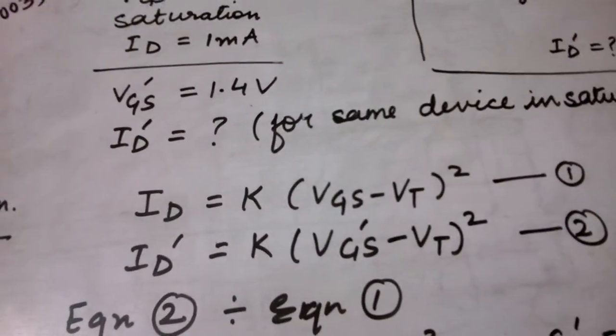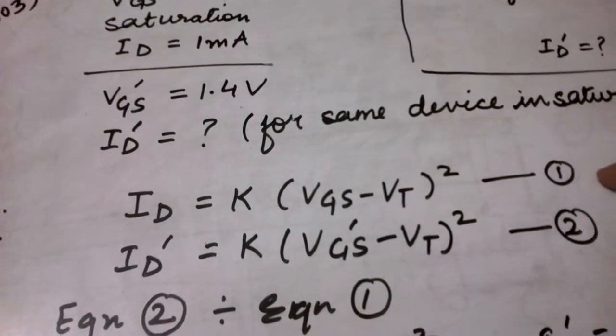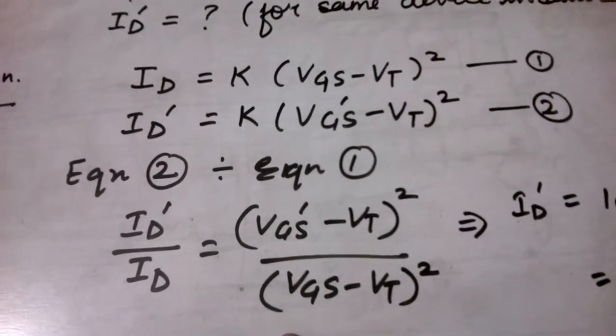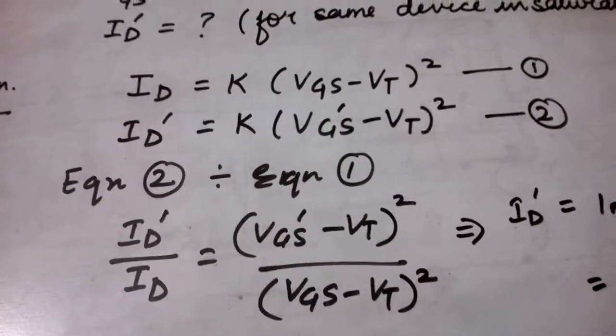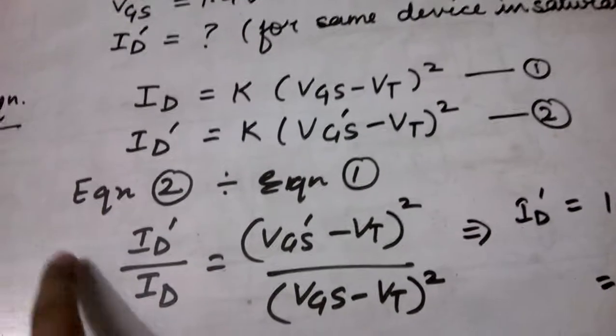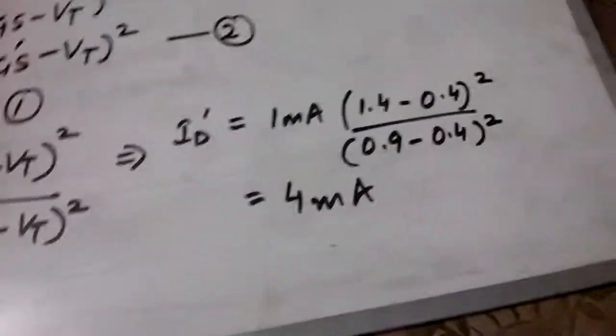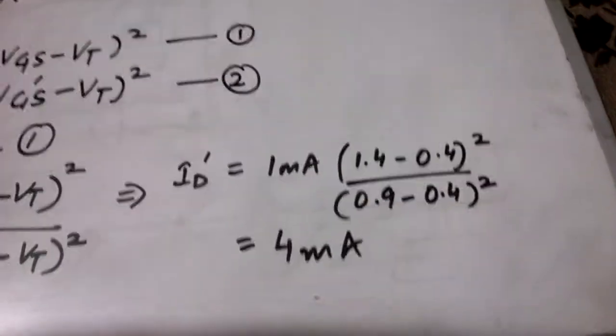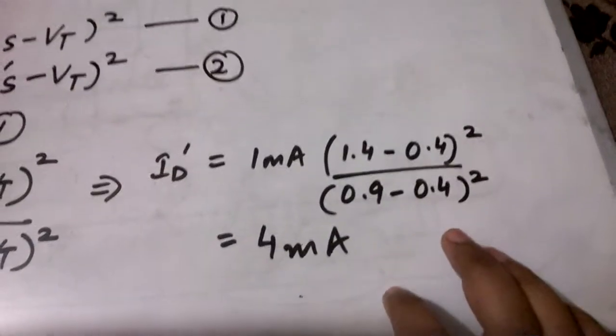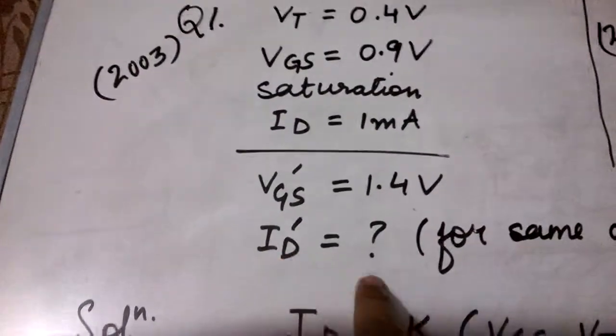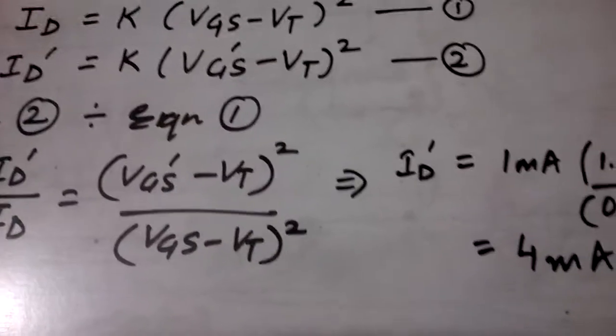I divide equation number 2 by equation number 1. Doing this we get this particular equation. K gets cancelled here. Now we can put all the values since we know all the values except Id dash, so we can find the unknown Id dash as it is shown here. The final result for the drain current which we get is 4 milliamperes. So when Vgs becomes 1.4 volts, the drain current obtained is 4 milliamperes.